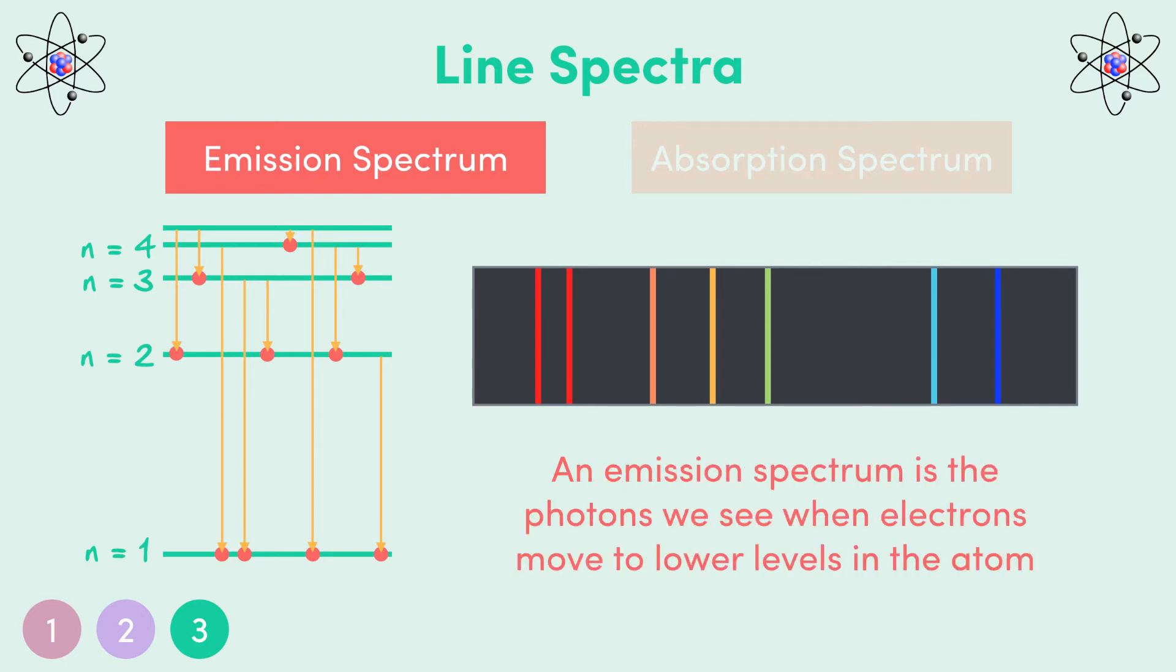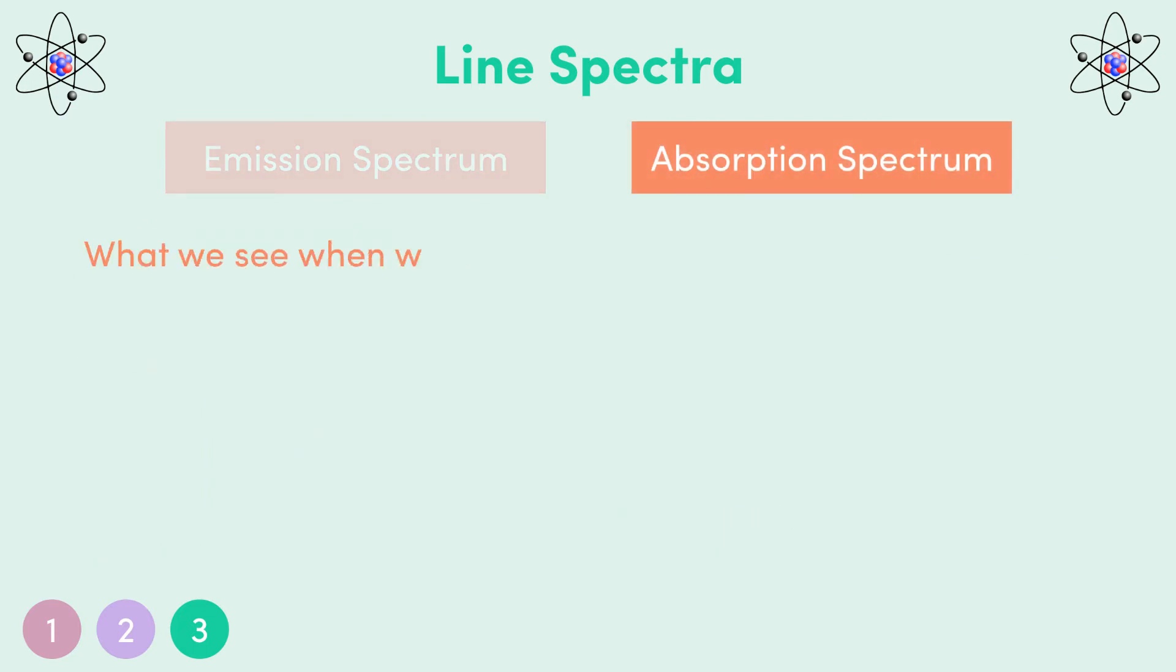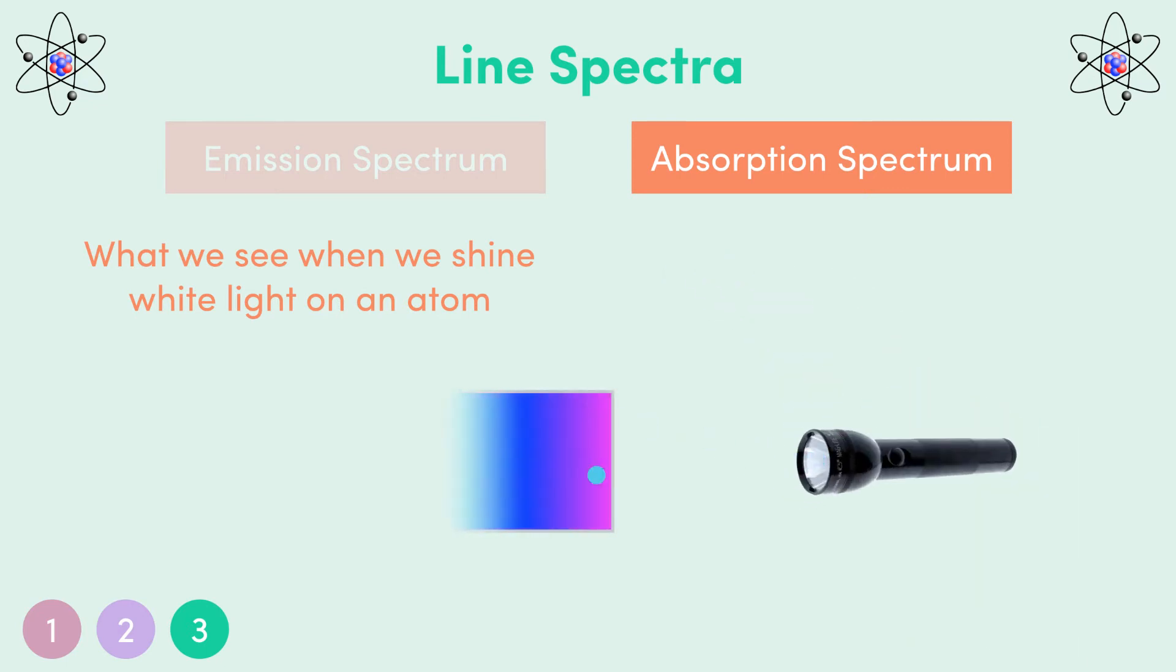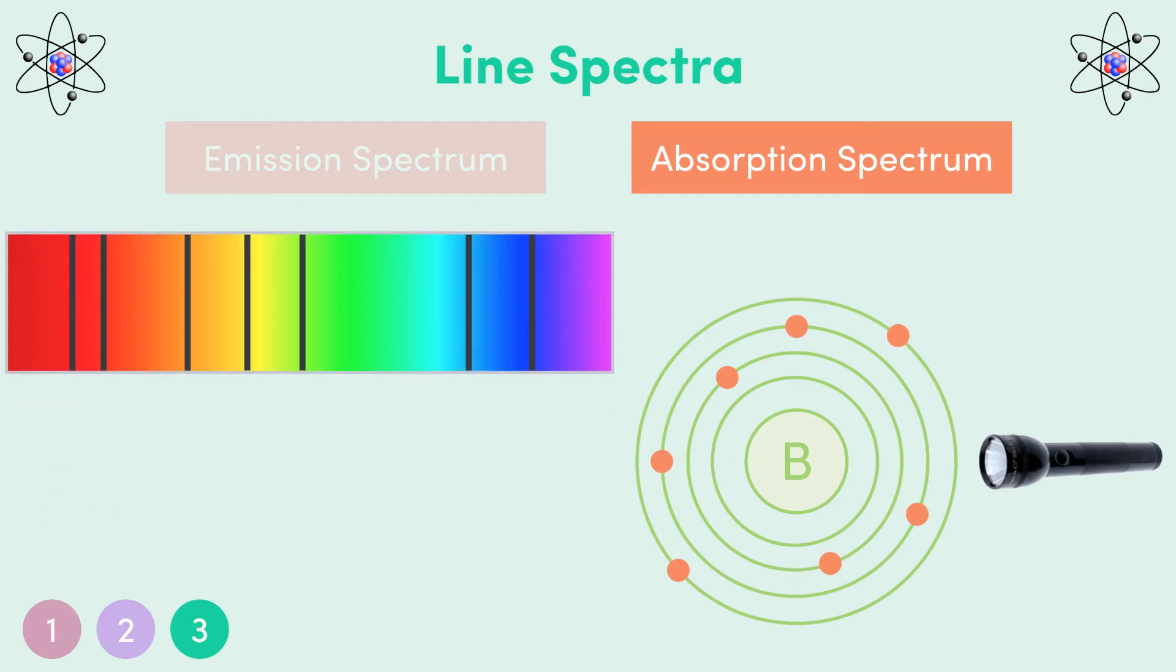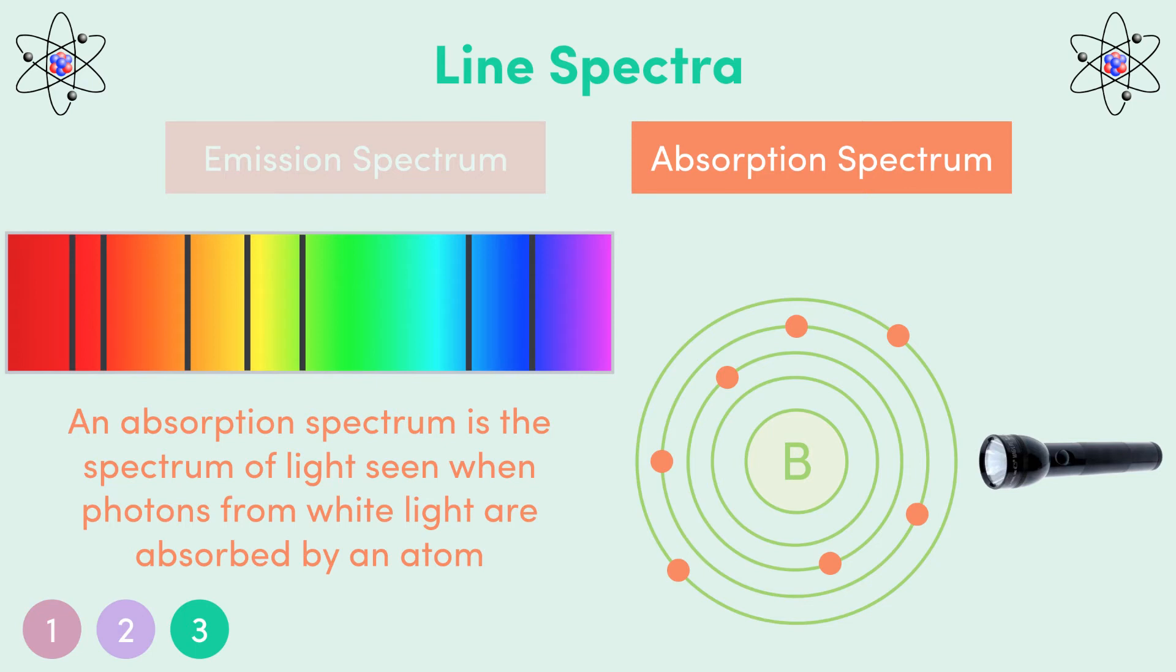An absorption spectrum is what we see when we shine white light on an atom. The white light would normally give us all of the wavelengths of light, and look like this. But, when shone on an atom, some of these photons are absorbed to move the electrons to higher energy levels. Meaning, the spectrum of light we see will be missing specific wavelengths, and look something like this. So, that's an absorption spectrum. The spectrum of light we see when some photons from white light are absorbed by an atom.